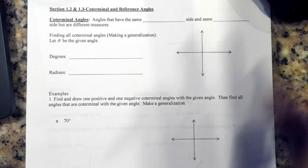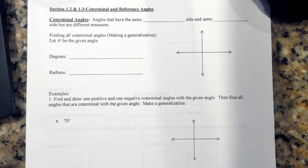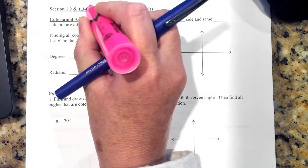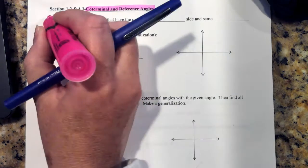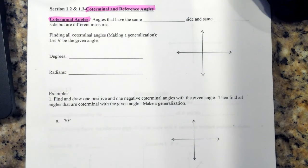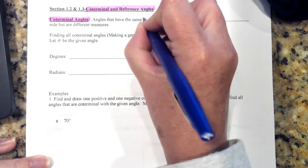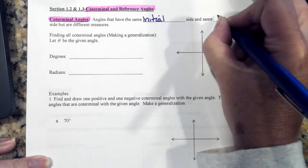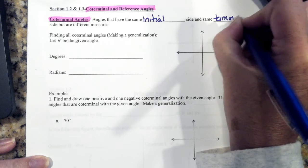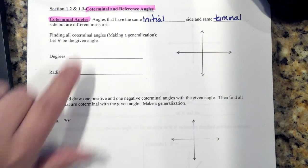In section 12.1 and 12.3, we're going to talk about the difference between coterminal and reference angles. A coterminal angle is angles that have the same initial side and terminal side, but can be different measures.